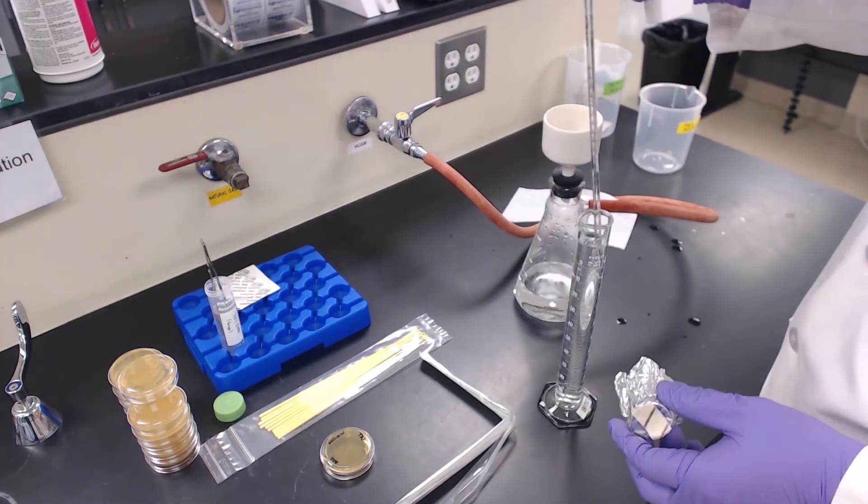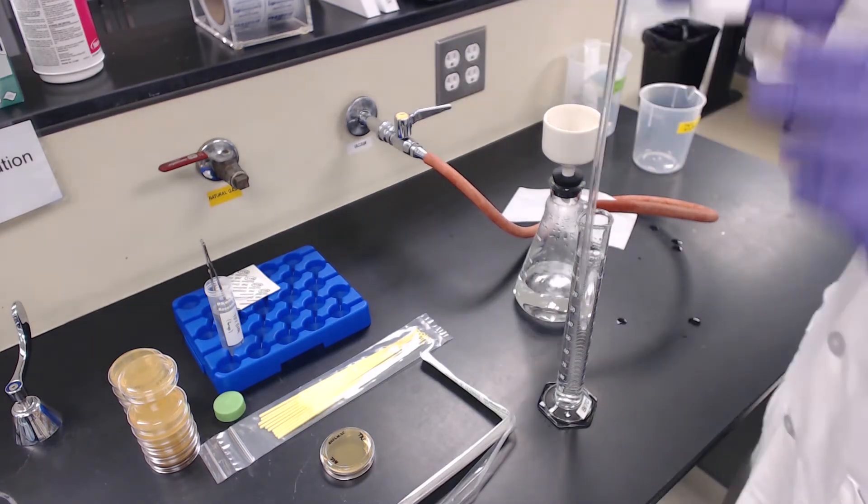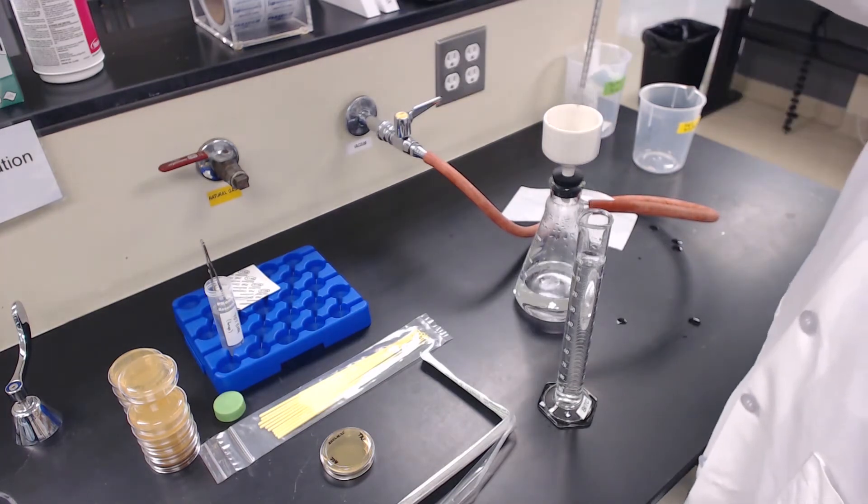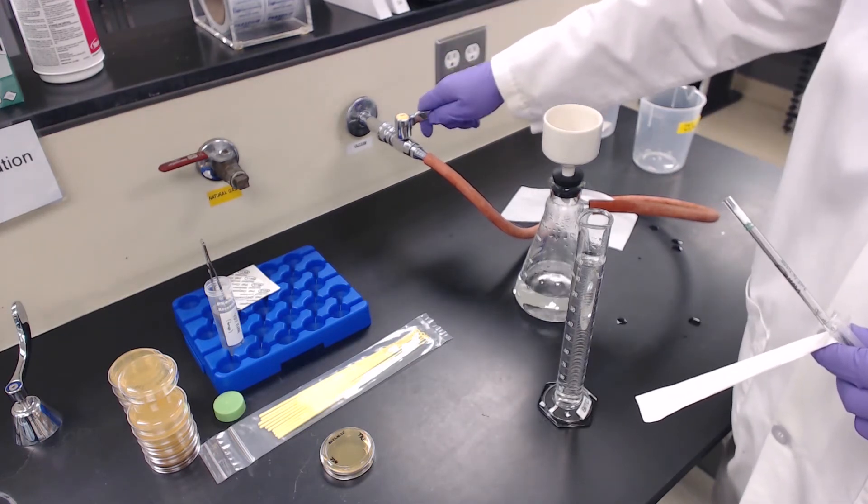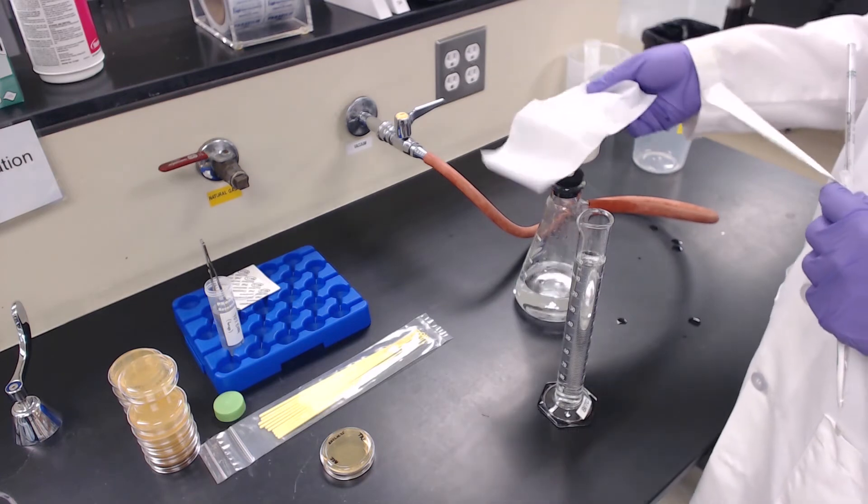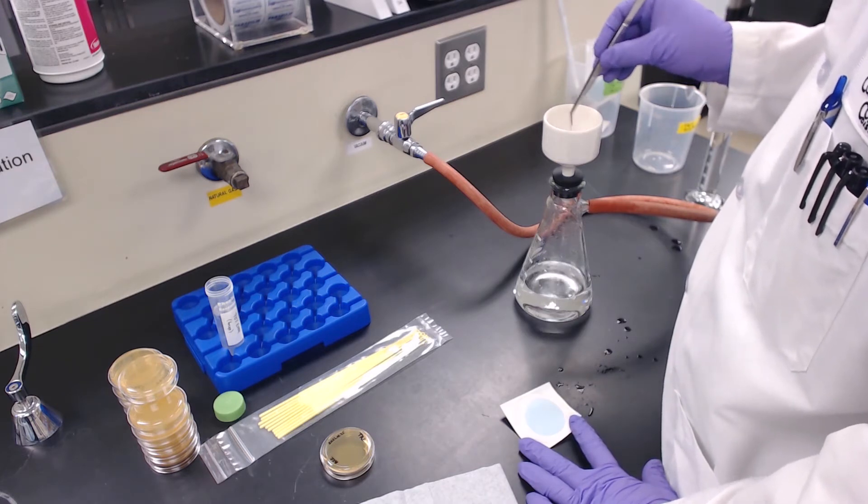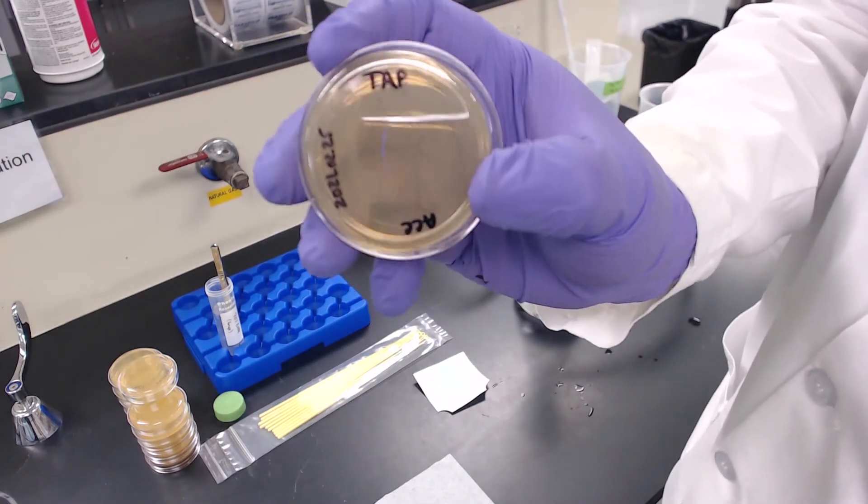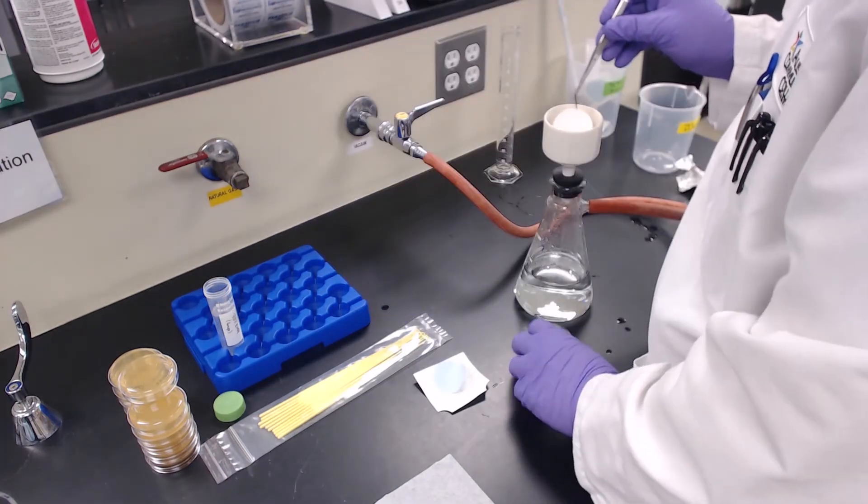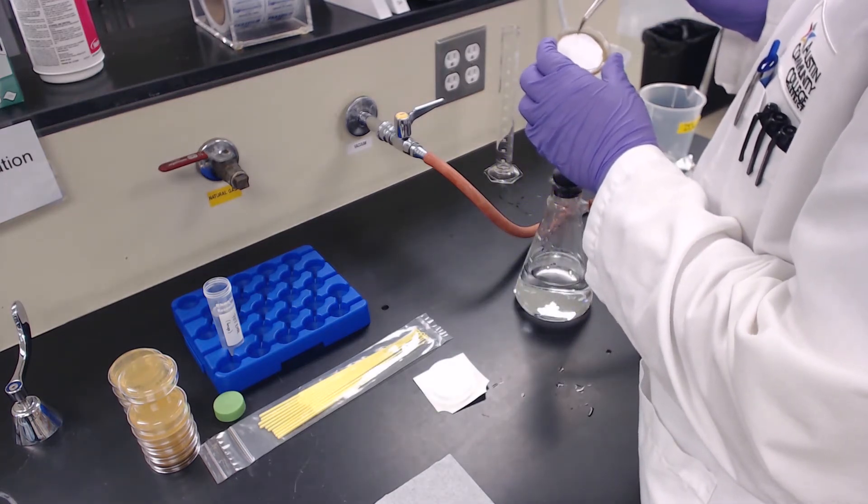Take your third water sample and as before, rinse the funnel with some of the water before placing in a new filter paper. Place a gridded filter paper in the rinsed funnel. Filter through 100 milliliters of your third water sample. Transfer the filter paper to the corresponding petri dish.